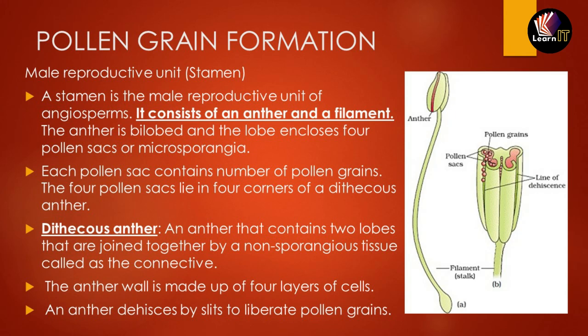Pollen sacs are also called microsporangia. Each pollen sac contains a number of pollen grains, and the four pollen sacs lie in the four different corners of the anther. A dithecious anther is one that contains two lobes joined together by a non-sporangial tissue called the connective tissue — it has four microsporangia but is called dithecious because it is bi-lobed.